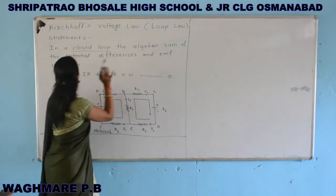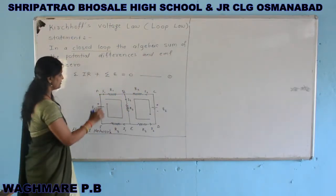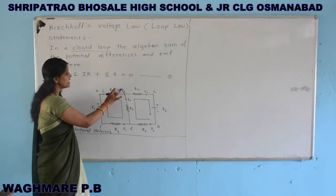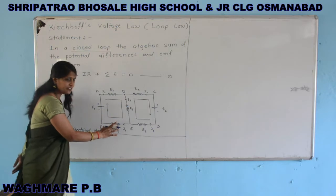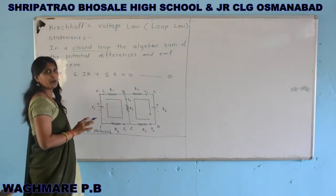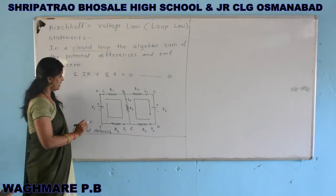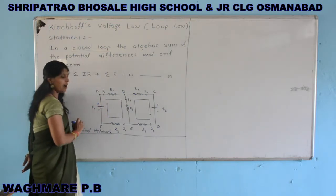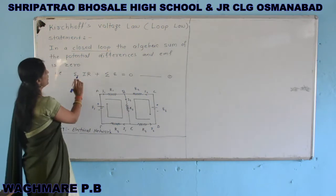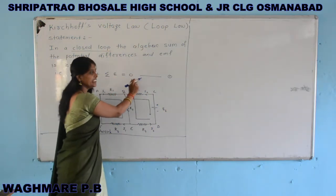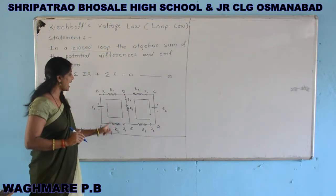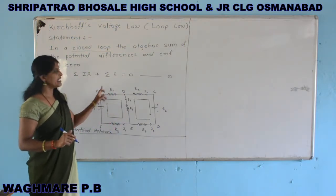In a closed loop, the algebraic sum of potential differences means the potential difference across each resistance — R1, R2, R3 — plus the sum of all EMFs in the circuit. The algebraic sum of potential differences and EMF is zero. Therefore: summation of IR plus summation of E equals zero. This is Kirchhoff's voltage law.